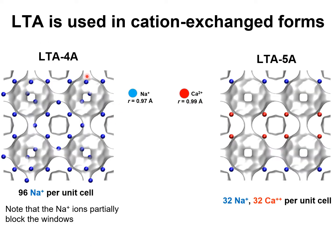For nitrogen-oxygen separations, two types of LTA zeolites are used: LTA-4A and LTA-5A. LTA-4A zeolites contain 96 sodium ions per unit cell. The location of these sodium cations are shown by the blue spheres.